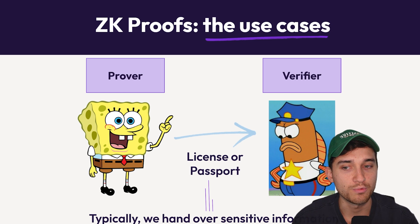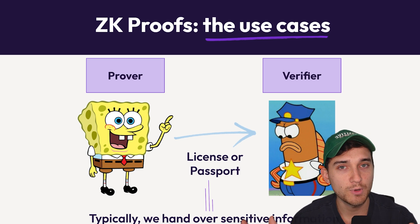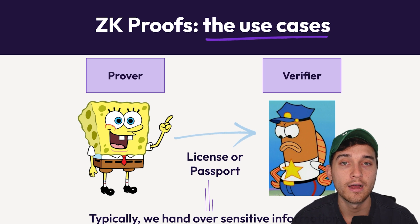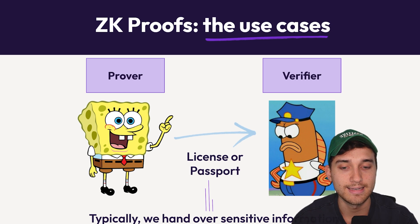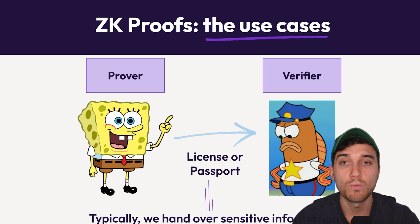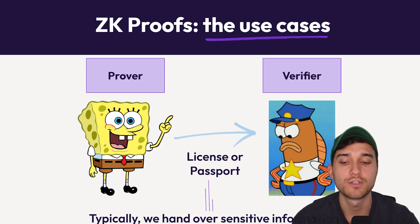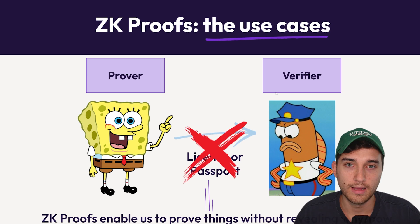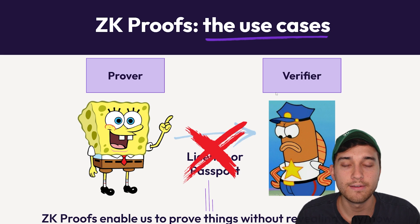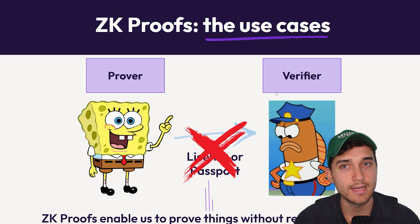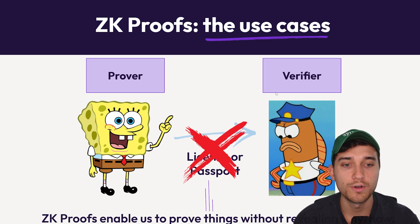In this scenario, the verifier only wants to confirm that SpongeBob is of legal age. SpongeBob hands over his license temporarily, and the verifier checks — but at the same time, the verifier gets all of this surrounding information that isn't necessary, and that SpongeBob probably doesn't want to give away. I don't want someone else to know where I live or my exact date of birth. Zero-knowledge proofs in this use case would mean that rather than giving over all that sensitive information, we would just send a zero-knowledge proof that satisfies the verifier's requirements — a simple yes or no — and none of the sensitive information is ever given away.